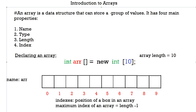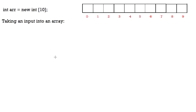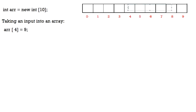Let's look at how to take inputs into an array. There are basically three ways. The first way is taking a direct input — say I want to take an input into index 4. This line of code means that in our array called R, we store the number 9 in index 4. So R[4] refers to the contents of index 4 in the array. In this way, we can separately store values into each box.